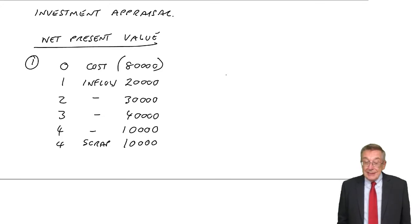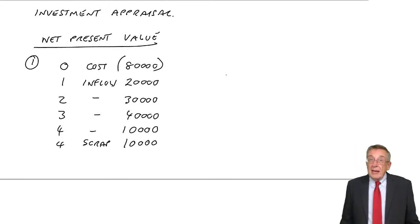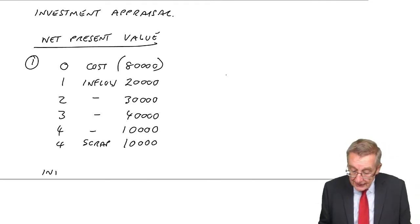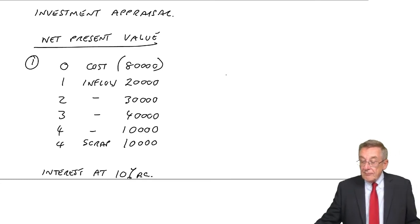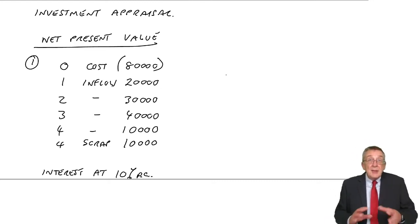Except, of course, there's interest. We're having to pay interest on money at £10,000 a year. And so, although if there was no interest, you pay out £80,000, get back £110,000 and net £30,000.